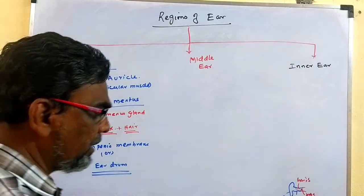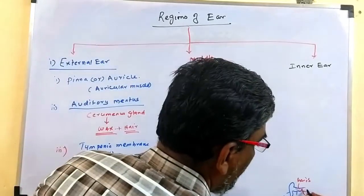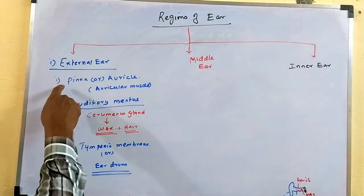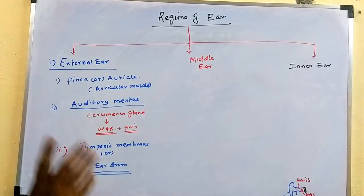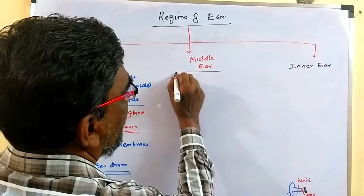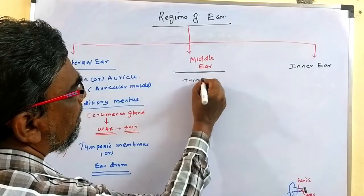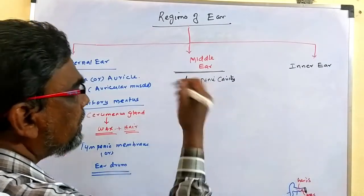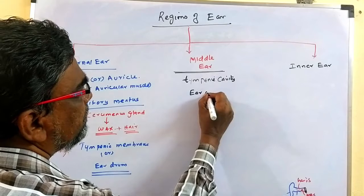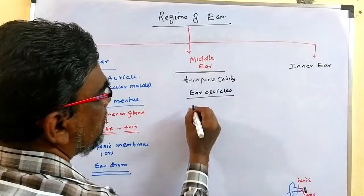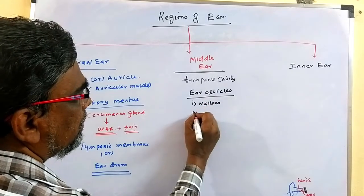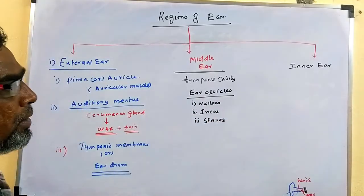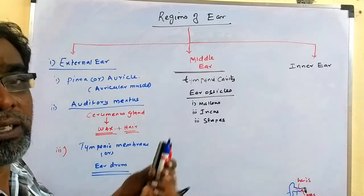The third region of the external ear is called the tympanic membrane or ear drum. The middle ear has a tympanic cavity with three small bones — ear ossicles: malleus, incus, stapes — which are attached to each other.